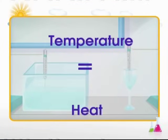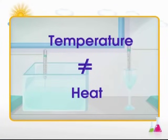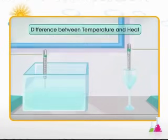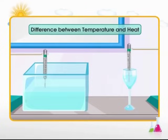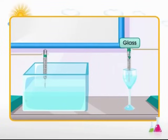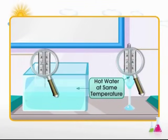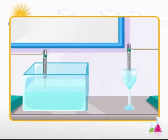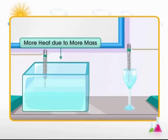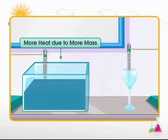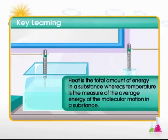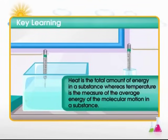Temperature is often thought to be the same as heat, but this is not true. Though they are related, there is a difference between them. Consider a glass and a large vessel, both completely filled with hot water at the same temperature. Though the water in the glass and the vessel are at the same temperature, the vessel has more heat as it has more mass. Heat is the total amount of energy in the substance, whereas temperature is the average energy of the molecular motion in a substance.